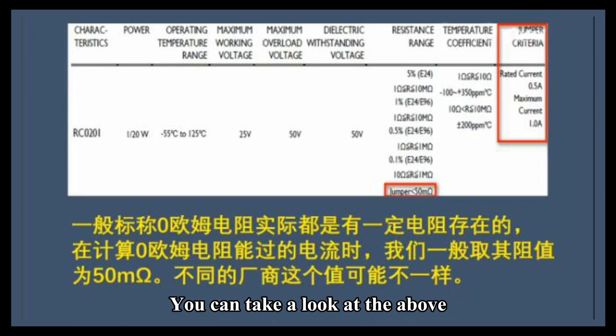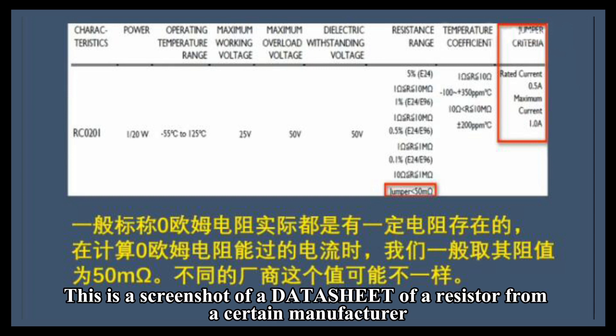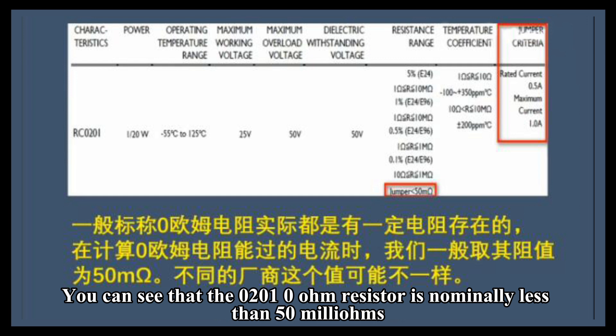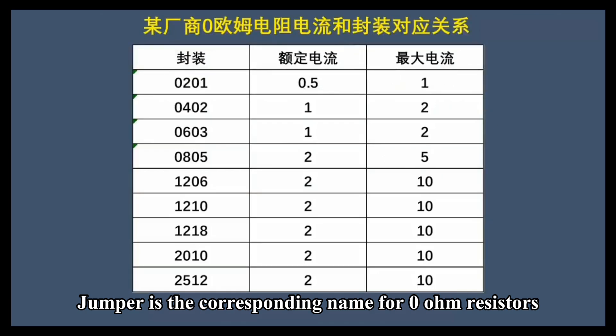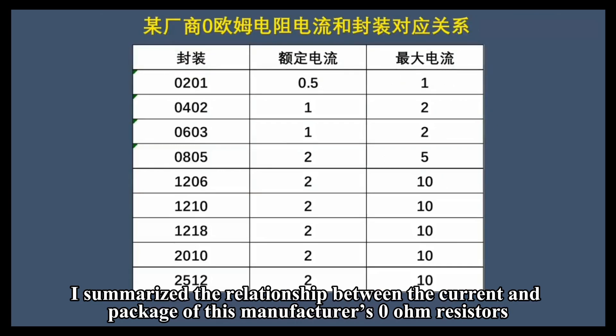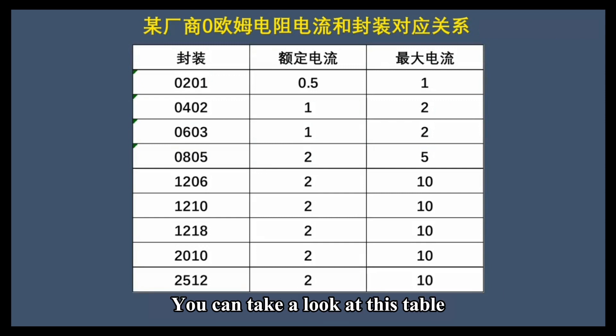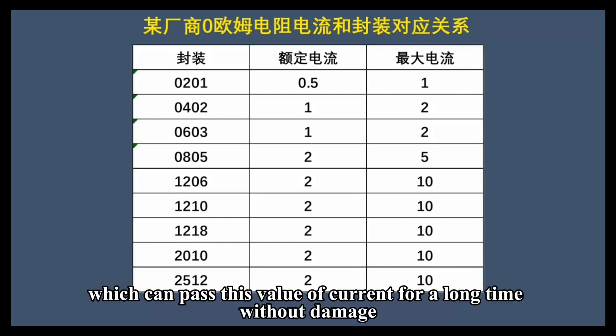This is a screenshot of a datasheet of a resistor from a certain manufacturer. You can see that the 0201 zero-ohm resistor is nominally less than 50 milliohms. Jumper is the corresponding name for zero-ohm resistors. The relationship between the current and package of this manufacturer's zero-ohm resistors is summarized in a table. The rated current is the value of current the resistor can pass for a long time without damage.